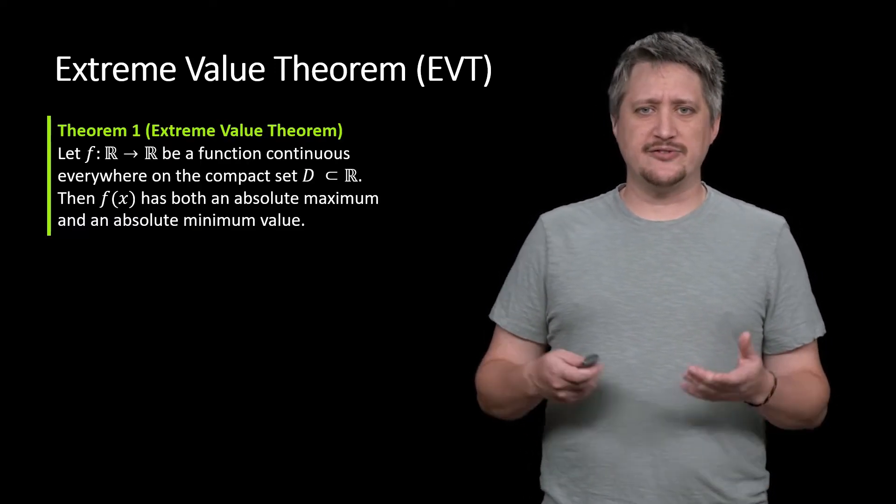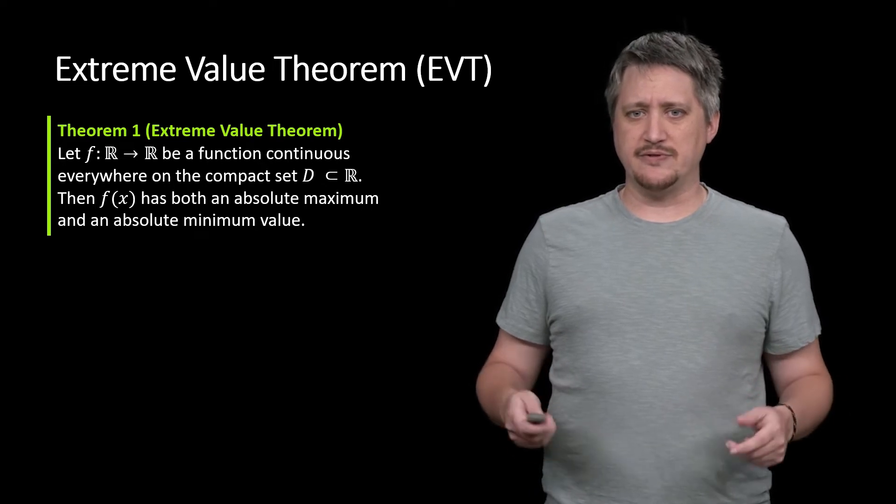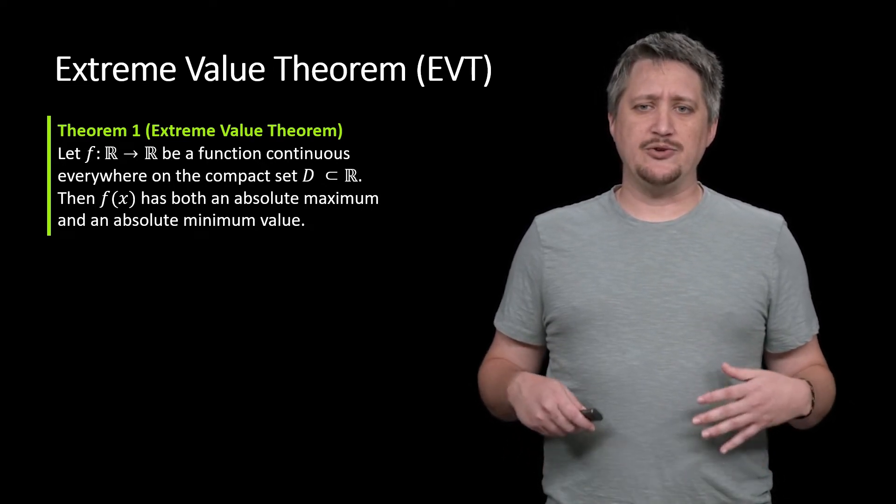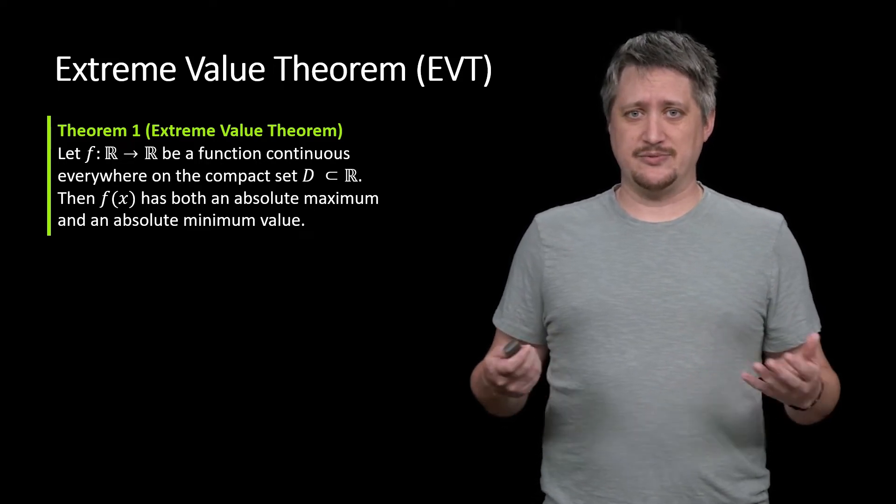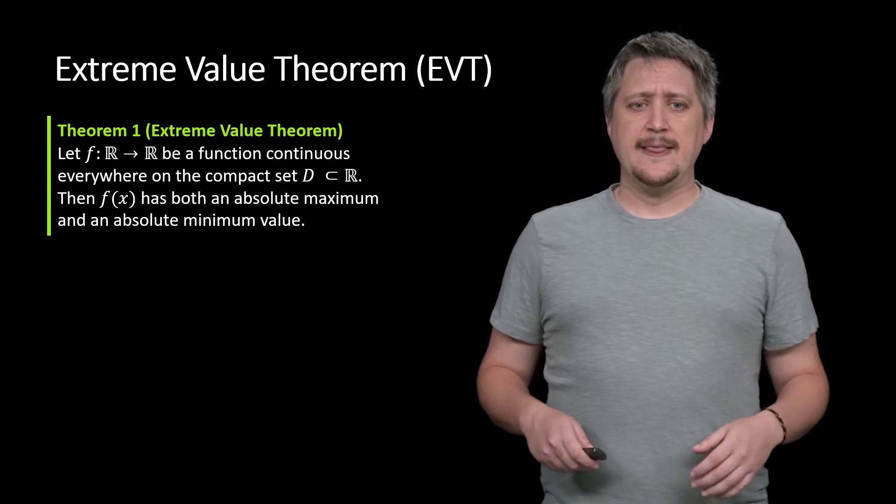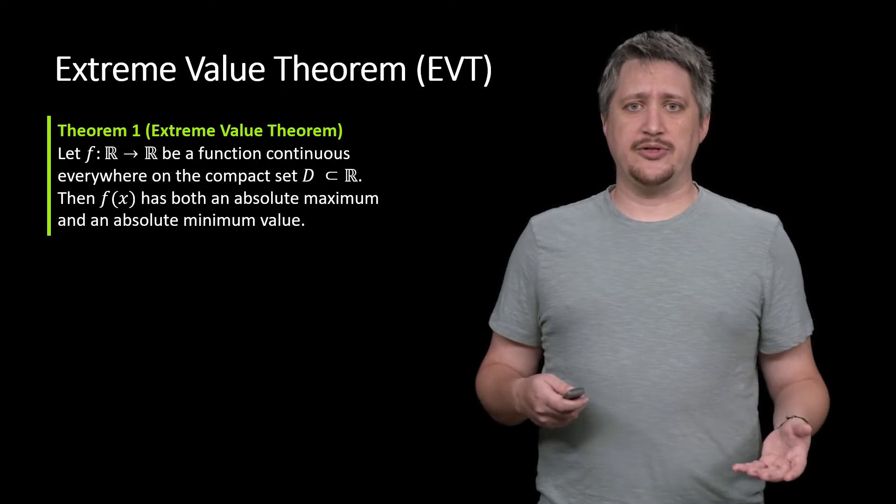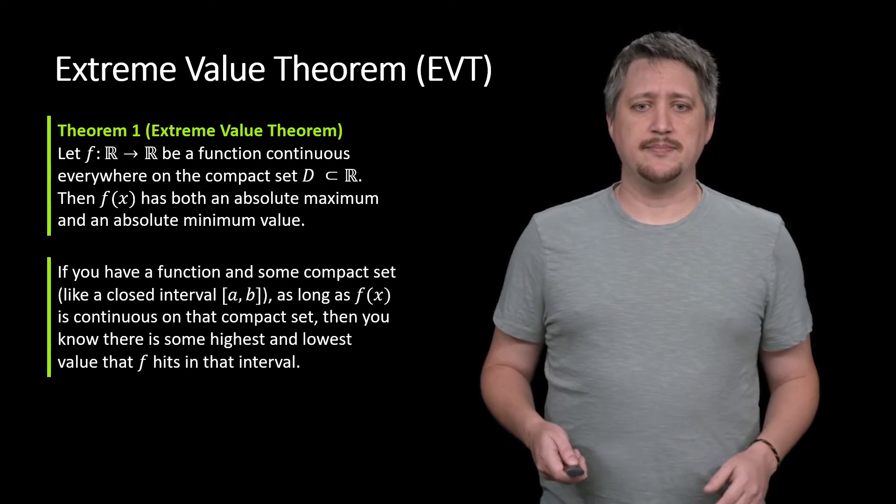EVT, as it's usually referred to, the extreme value theorem, says, if you have F that's from R to R, meaning a real valued function, and you know that it's continuous everywhere on some compact set, that's why we need to know what compact sets are, then it must attain both an absolute maximum and an absolute minimum.